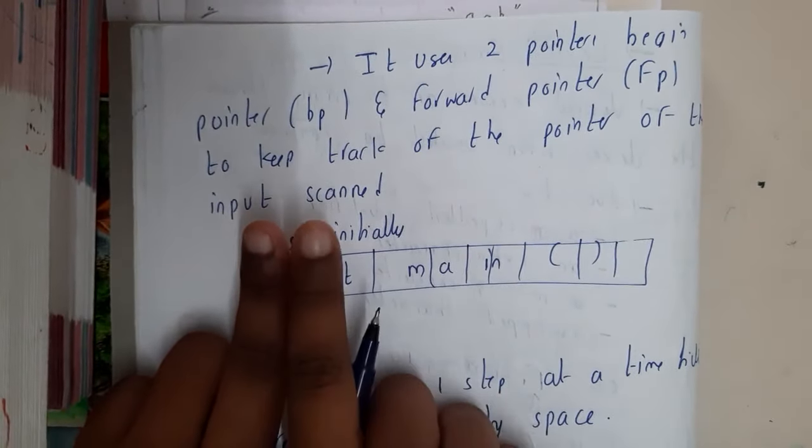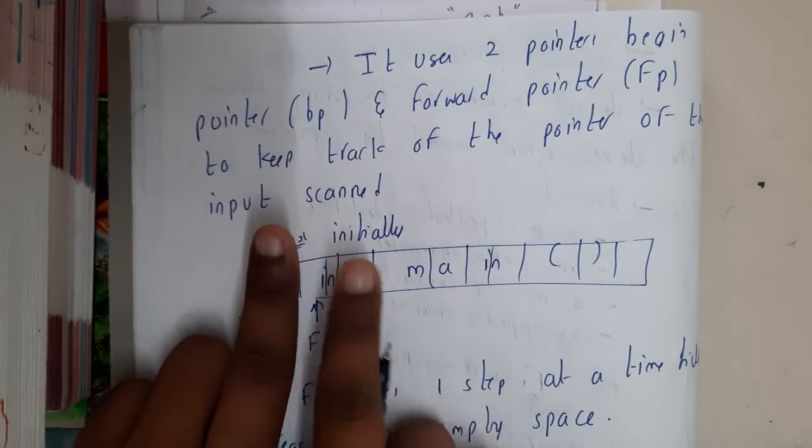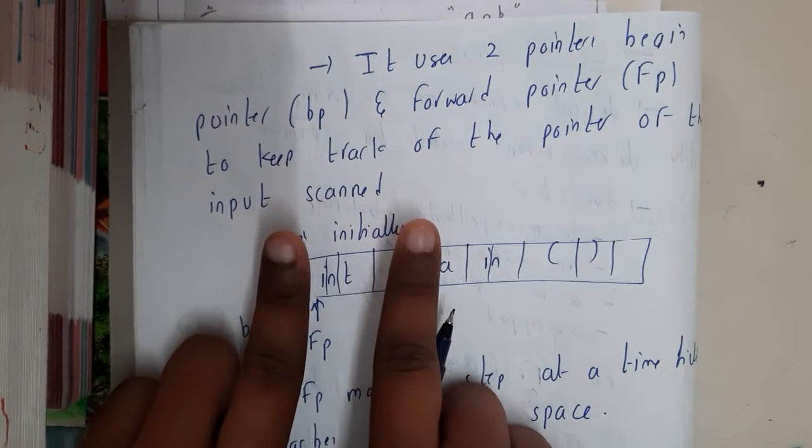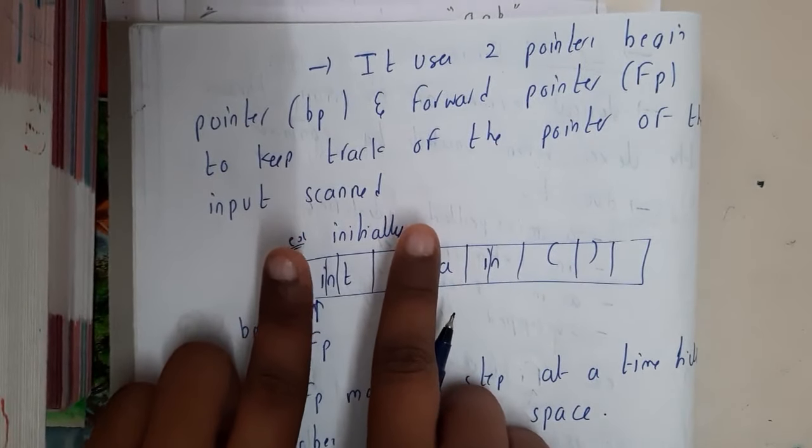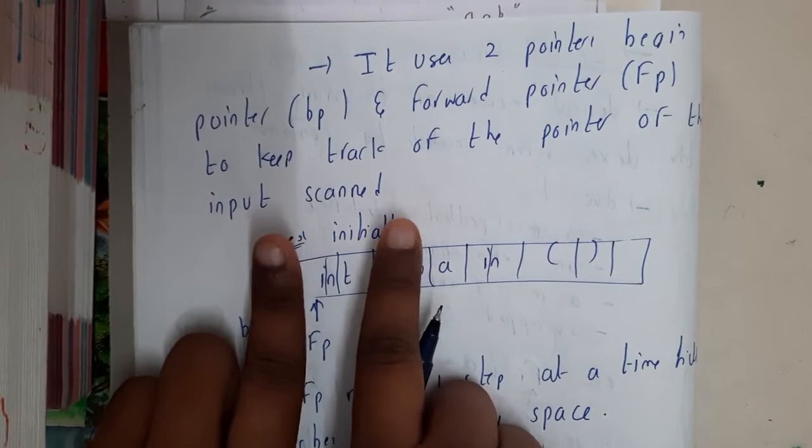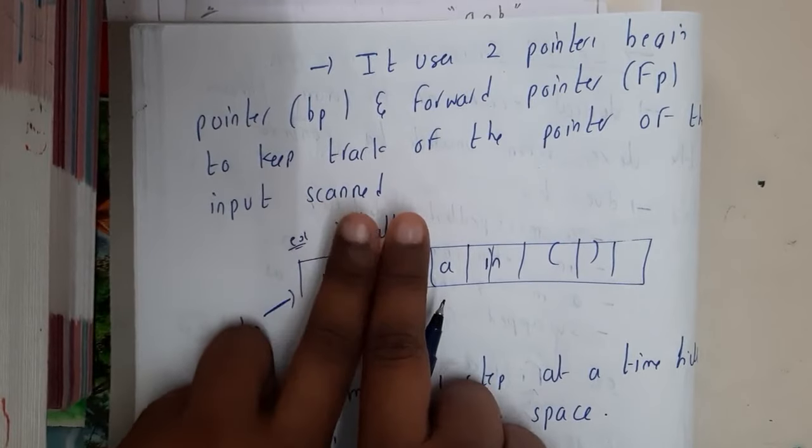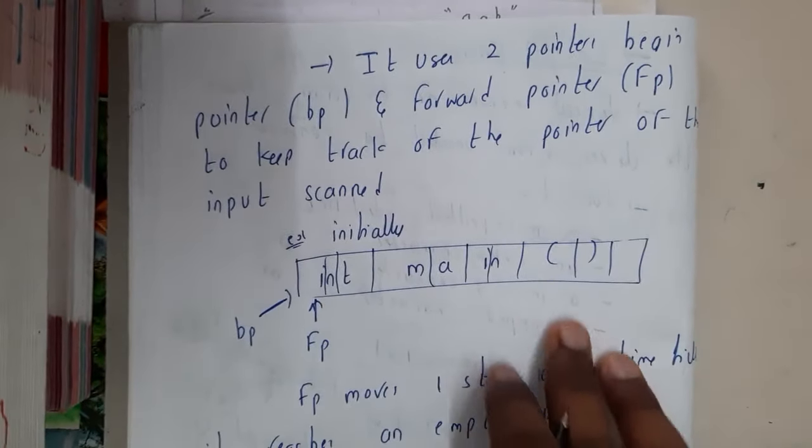The forward pointer will slowly move from this exact position and move till it reaches an empty space. Once it reaches an empty space, it will consider this whole part from here to here as a single lexeme.